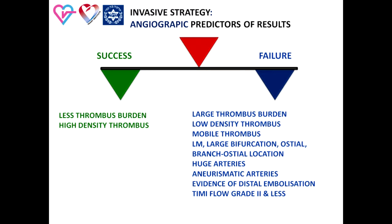As a rule, invasive procedures in a patient with a large thrombus burden, low density thrombus, or mobile thrombus are associated with higher risk of distal embolization and no reflow. A lesion situated in the left main, a bifurcation site, or an ostial or branch ostial site is a predictor of thrombus shifting and embolization.